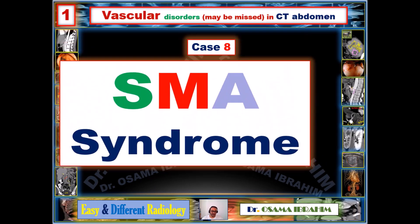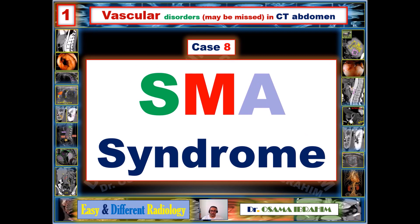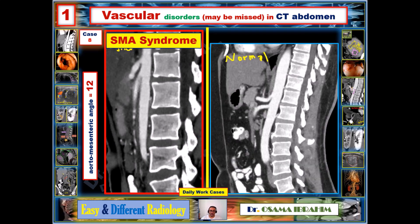The final presentation compares an SMA syndrome case with a normal SMA-aorta relationship. Learning to visually recognize the difference on CT will prompt you to measure the angle, measure the distance, check whether the stomach is dilated, and review the patient's complaints such as hematuria. In the SMA syndrome case, the angle is 12 degrees. In the normal case, the celiac trunk arises normally from the anterior aspect of the aorta.